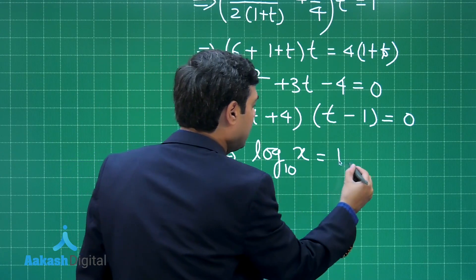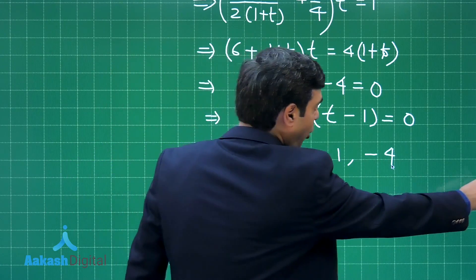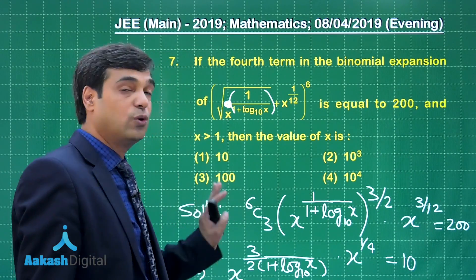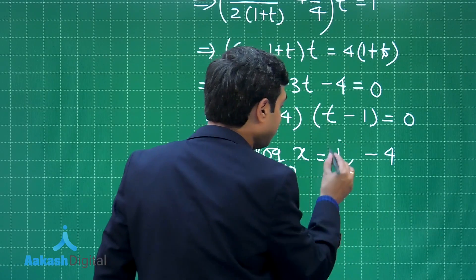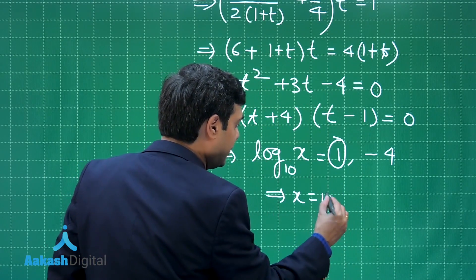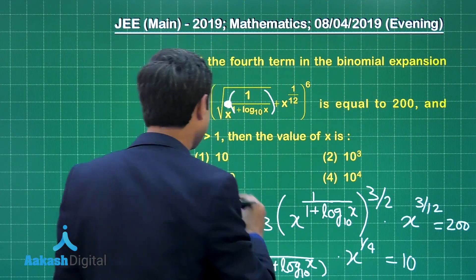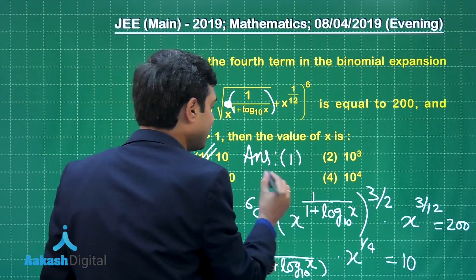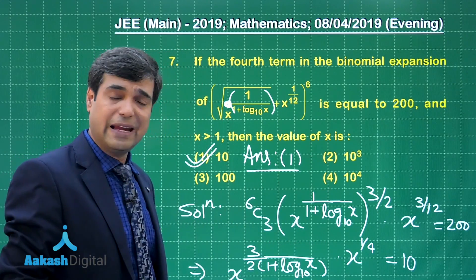Log x to the base 10 equals 1 or minus 4. Now when we look at the options we see x is given as 10, 100, 10³, 10⁴. From here the first value gives x equal to 10. From the given options, the correct answer is option number 1. Let us move on to the next one, question number 8.